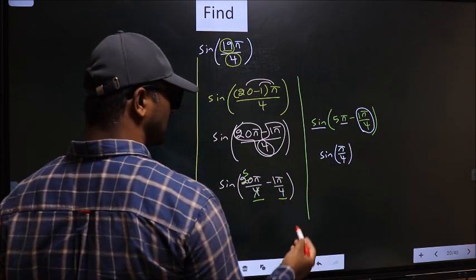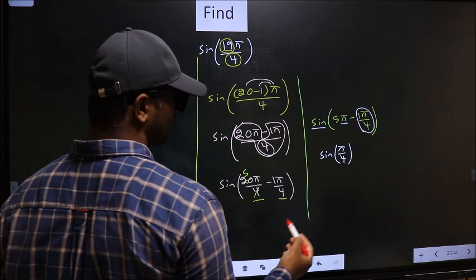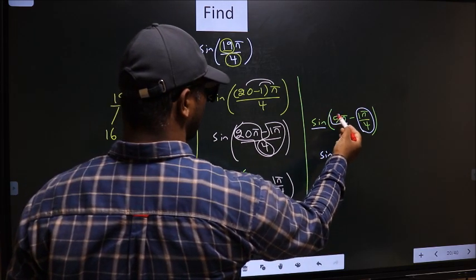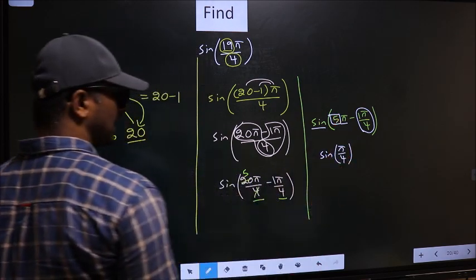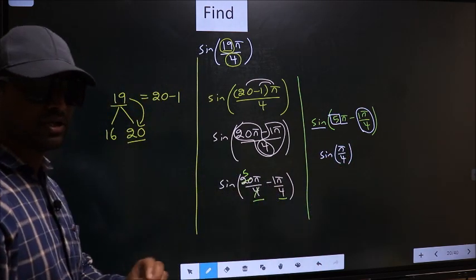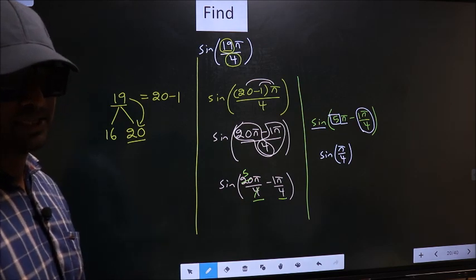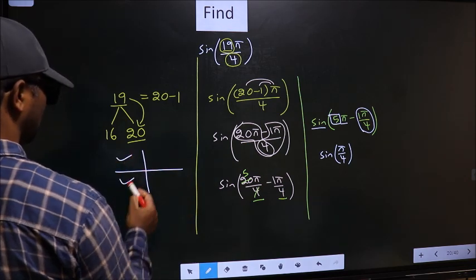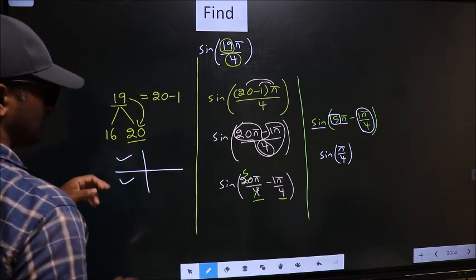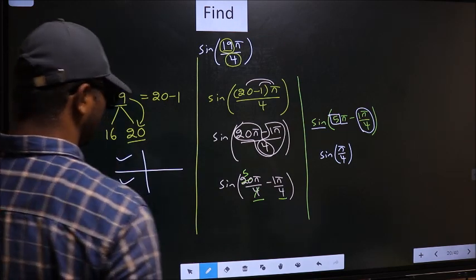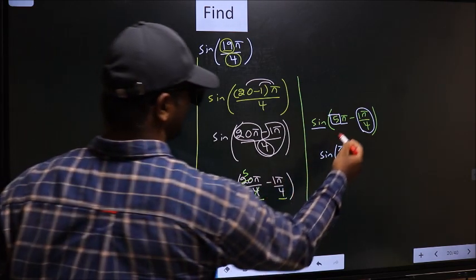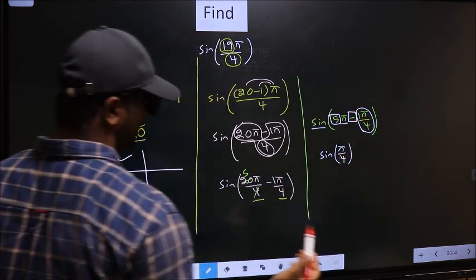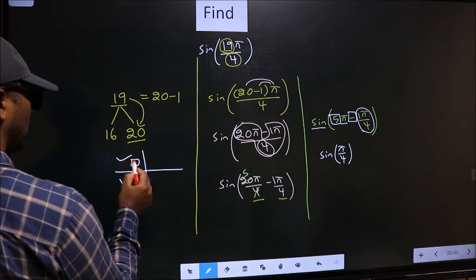Now the question is, will we get here plus or minus? To answer that, you look at the number before π, which is 5. And 5 is odd. And all the odd multiples of π lie in the second or in the third quadrant. Now to decide in which quadrant it lies, we should look at this symbol. Here we have negative. That means the angle lies in the second quadrant.